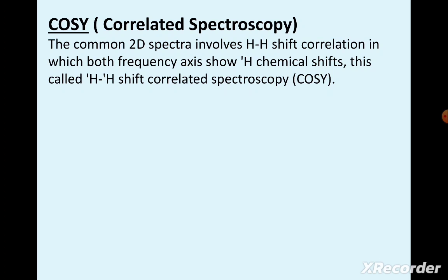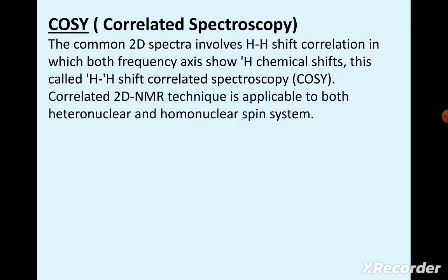This is called 1H-1H proton shift correlated spectroscopy. COSY, or correlated 2D NMR technique, is applicable to both heteronuclear and homonuclear spin systems — so it is applicable to both types of spin systems.